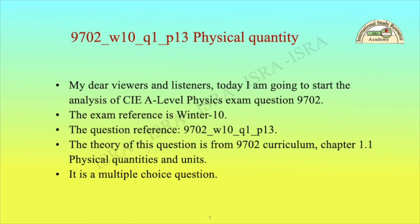My dear viewers and listeners, today I am going to start the analysis of CIE A-level physics exam question 9702. The exam reference is winter 10, question 1, paper 13. The theory of this question is from the 9702 curriculum chapter 1.1 on physical quantities and units. It is a multiple choice question.